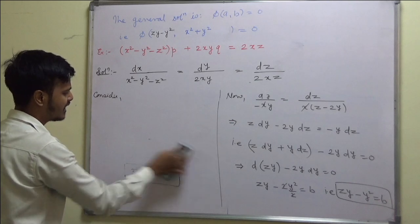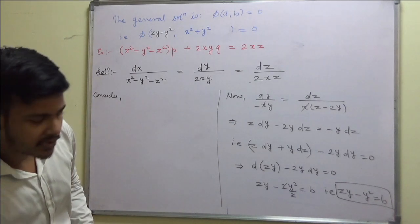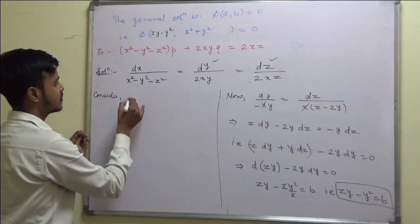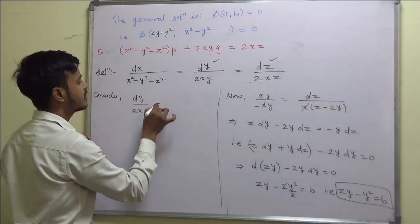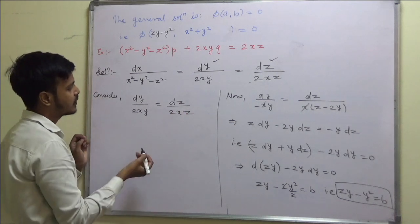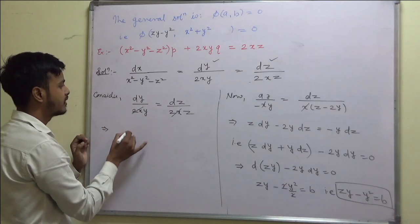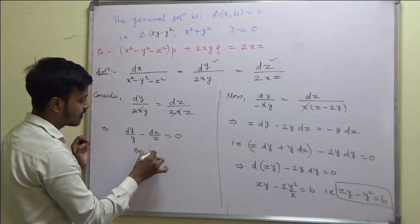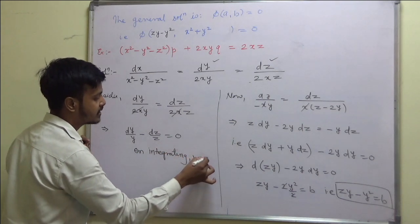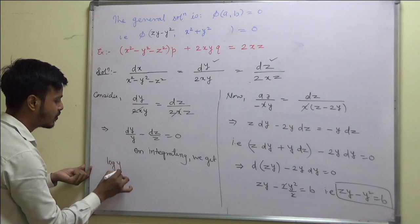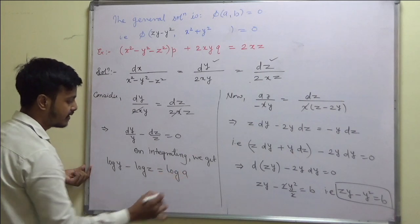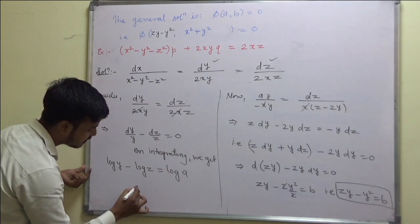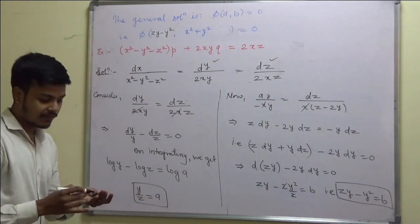Take the second and third ratios dy/(2xy) = dz/(2xz). Here 2x cancels, leaving dy/y - dz/z = 0. On integrating: log y - log z = log a, which gives log(y/z) = log a. Removing the log by exponentiation, the first integral curve is y/z = a.